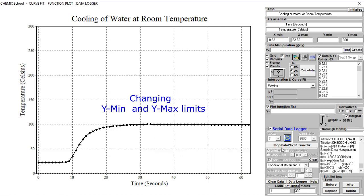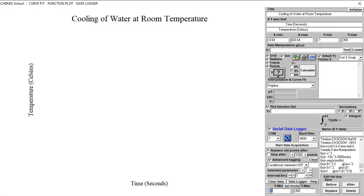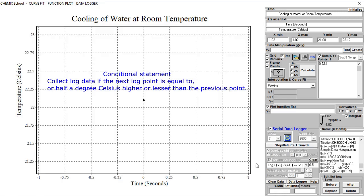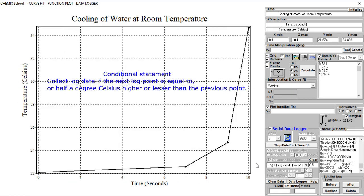Click the Data Acquisition button again to stop logging. Click the Clear Data button and remove the content of the Y minimum and Y maximum text fields. In this example we will use a conditional statement. First, select the statement. In this case we want to collect log data if the next log point is equal to, greater than, or lesser than half a degree Celsius of the previous point. Start logging by clicking the Data Acquisition button. By using a conditional statement like this, instead of collecting log points at fixed time intervals, we can greatly reduce the amount of log points needed to visualize an experiment.